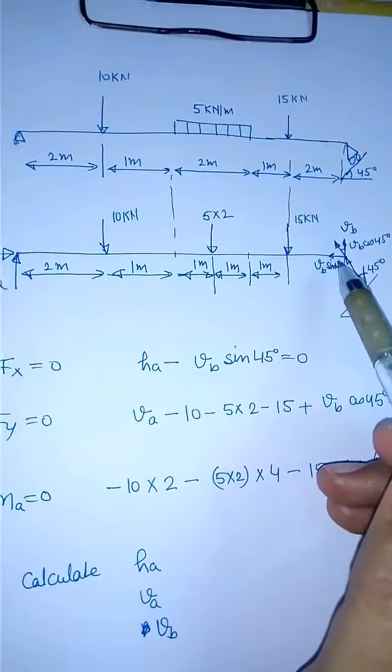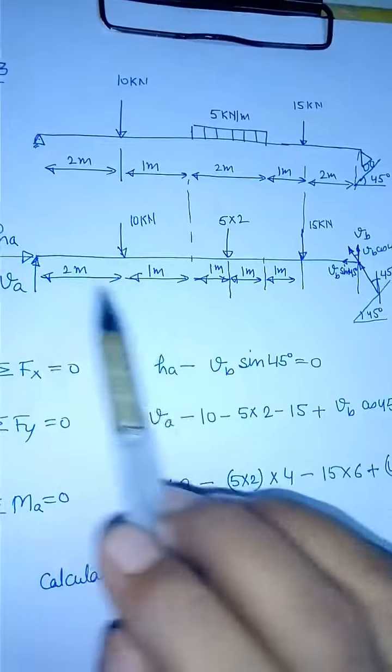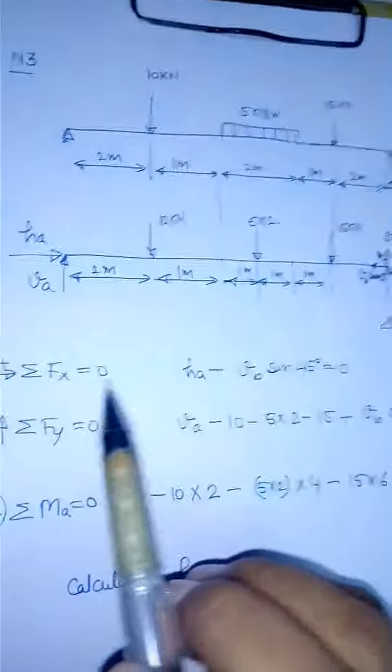Now let us make equations of equilibrium for the complete beam. So summation FX equals 0 will say HA minus VB sin 45 is equal to 0.